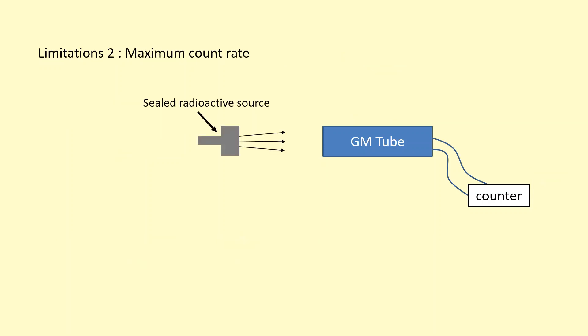Another limitation is with the GM tube itself. If I bring the sample very close to the GM tube, the count rate can't actually go higher than 5,000 counts per second. This is because there's something called a dead time where the particles inside have all been ionized, and it takes some time to become unionized so they can detect more ionizing radiation.